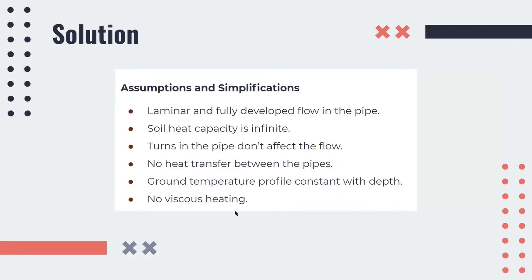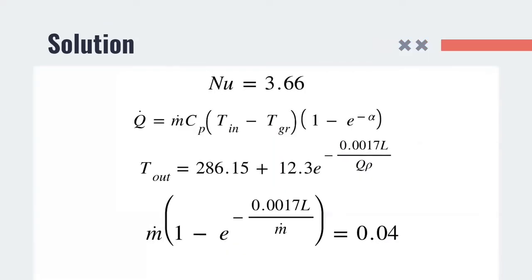Some of the assumptions and simplifications used for solving the problem are laminar and fully developed flow in the pipe, soil heat capacity is taken to be infinite, turns in the pipes don't affect the flow, no heat transfer is considered between the pipes, and the ground temperature profile is considered to be constant and no viscous heating. The Nusselt number correlation used is that for a laminar pipe internal flow with a constant outer surface temperature, that is Nusselt number is equal to 3.66.